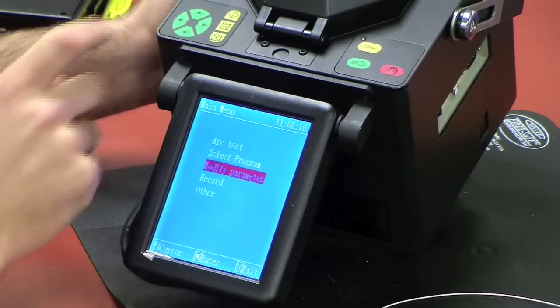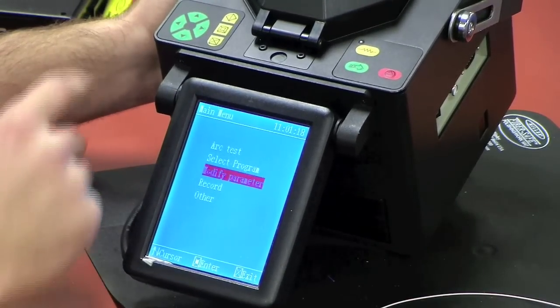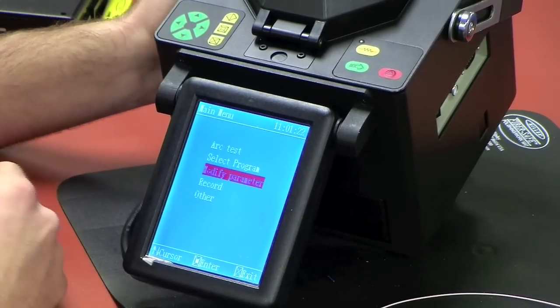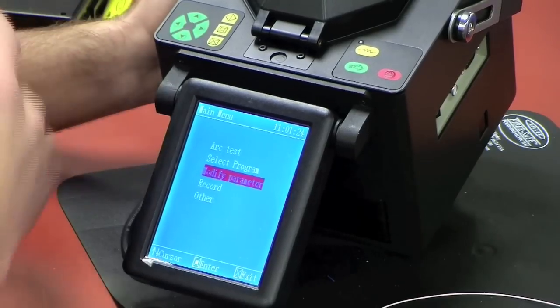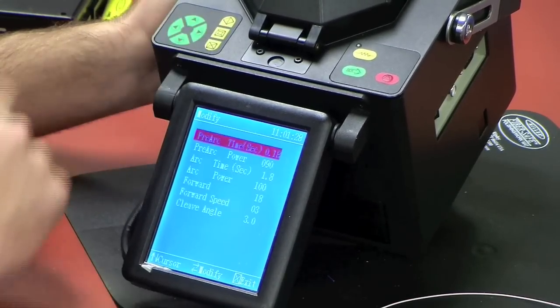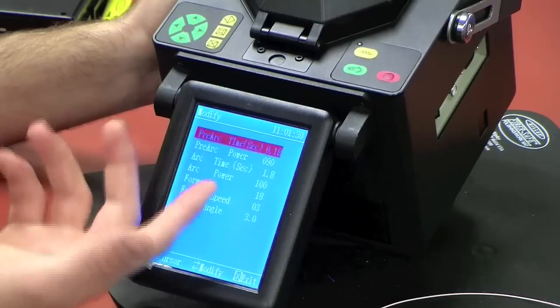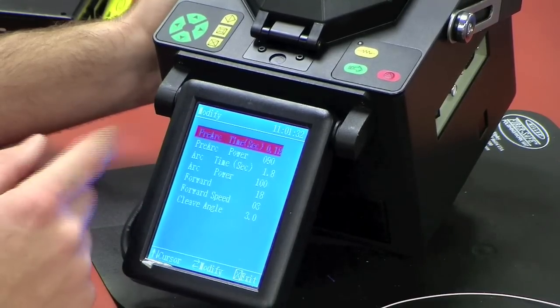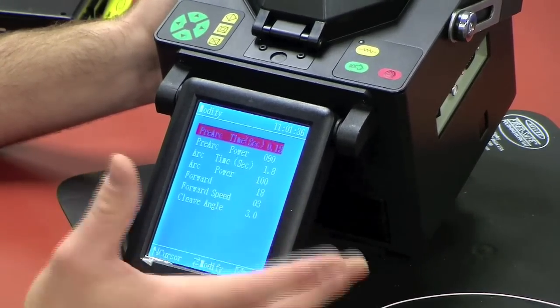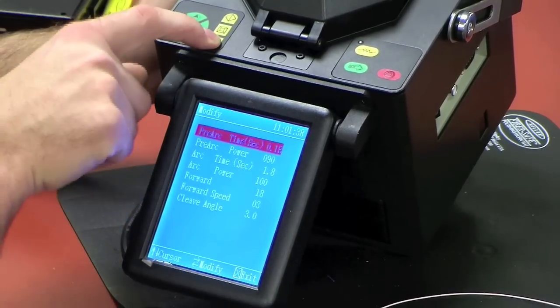And next menu, Modify Parameter. This is another menu that really doesn't need to be changed unless it needs to be serviced or calibrated. If so, you could go into Modify Parameter and go through the Pre-Arc Time, Pre-Arc Power, and that's standard factory settings. You don't really want to touch that.